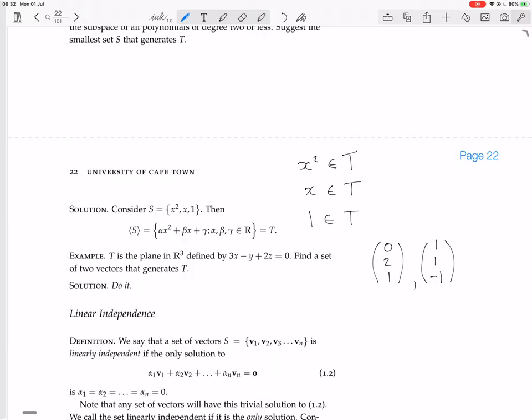Now those two vectors, they are not linear combinations of each other, because they're not scaling multiples of each other. So this set will certainly generate T. Because it's two vectors that are in the plane that are not multiples of each other. And so that generates the whole plane. And that's it.